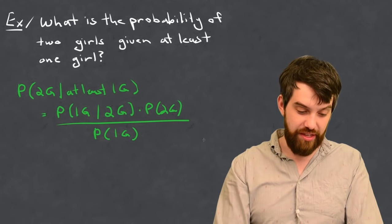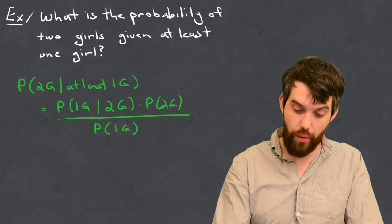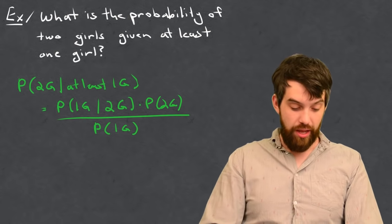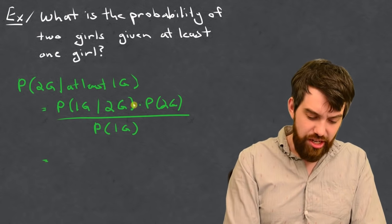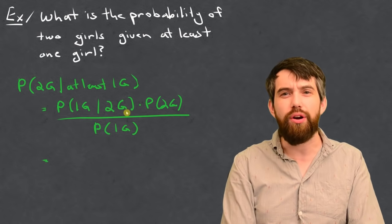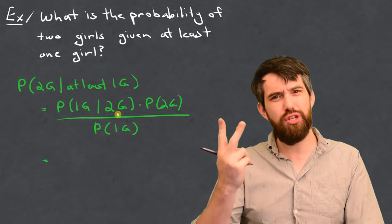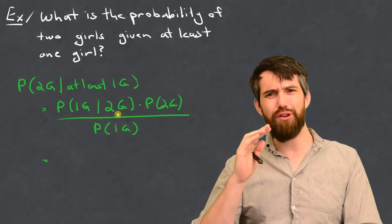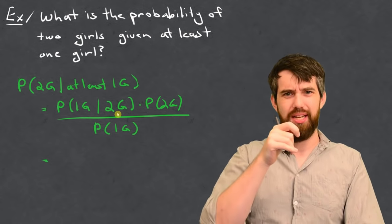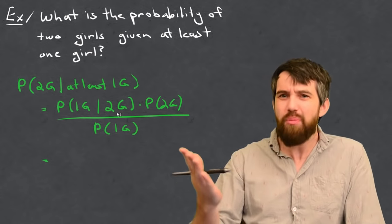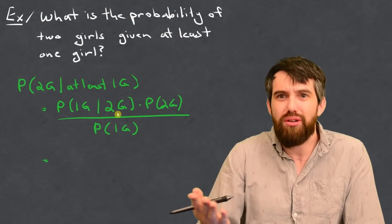All right, so we have this computation, so how can we actually go and evaluate it now? Well, let's look at this conditional probability, the probability of having one girl, at least one girl, given that you know that there's two girls. But if you're being told that there's two girls, then the probability of having at least one girl is 100%. If you have two girls, you have at least one of them.